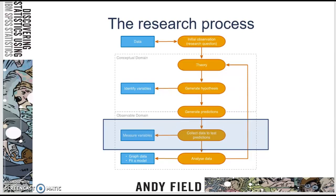In the research process, we're going to talk a little bit here about measuring variables. A variable is something that is changing. You'll have independent and dependent variables. Your dependent variables are those things that are measured, those things that are changing. Your independent variable is the variable that is going to influence the dependent variable.